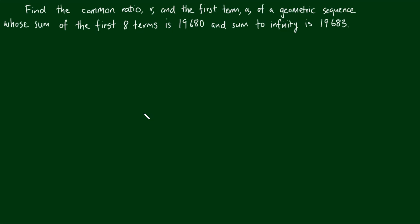The first thing to note here is there is a sum to infinity, and therefore the absolute value of the common ratio r must be less than one.